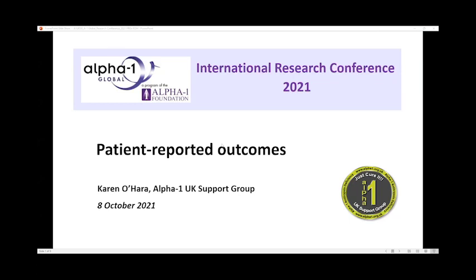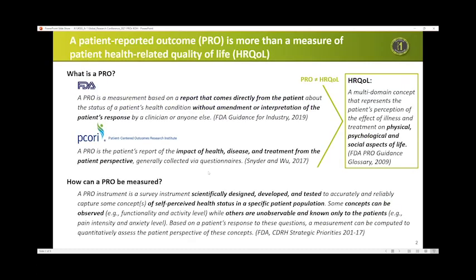What I'd like to highlight is that, contrary to common perception, a PRO can be much more extensive than just capturing a patient's health-related quality of life. It may also include additional measures of the patient's health status. As the definition shows, a patient-reported outcome measure is an instrument that may also capture concepts such as functionality or activity levels.